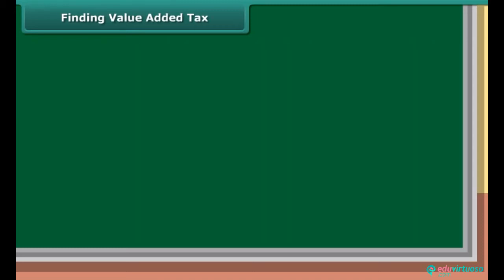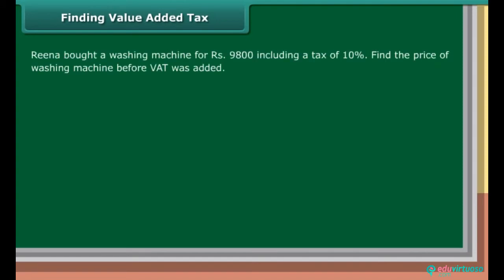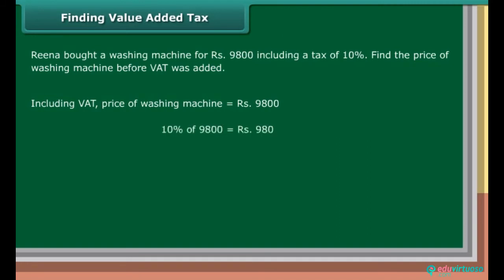Finding value added tax: Rina bought a washing machine for Rs. 9,800 including a tax of 10%. Find the price of the washing machine before VAT was added. Including VAT, price of washing machine is equal to Rs. 9,800. 10% of 9,800 is equal to Rs. 980. Price before VAT added is equal to Rs. 9,800 minus 980, which is equal to Rs. 8,820.